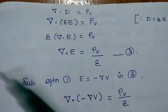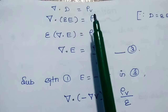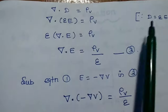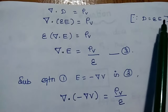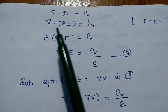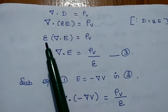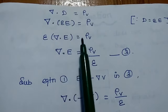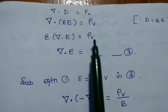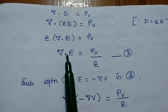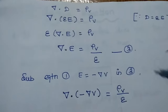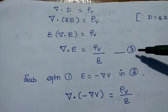In the second equation, del dot D equals rho V. D can be replaced by epsilon times E, since D equals epsilon E. Taking epsilon outside as a constant gives epsilon times del dot E equals rho V. Moving epsilon to the right-hand side gives del dot E equals rho V by epsilon. This is the third equation.